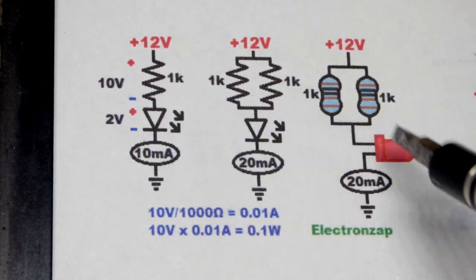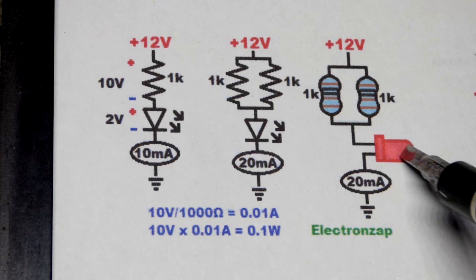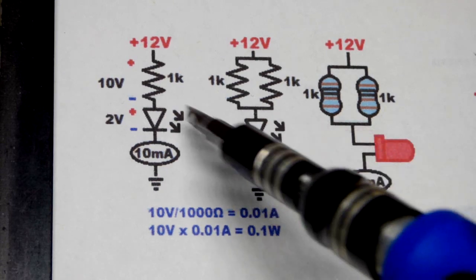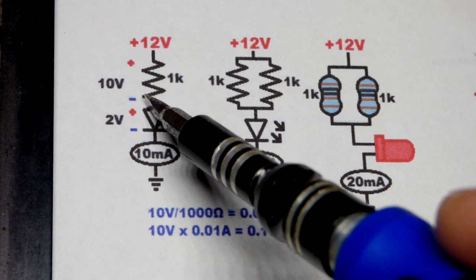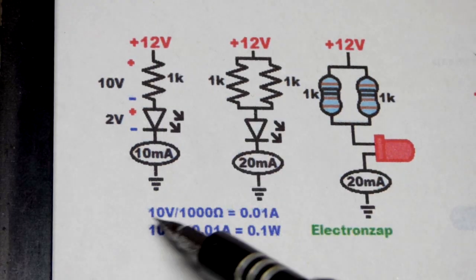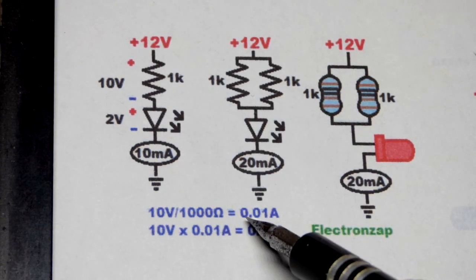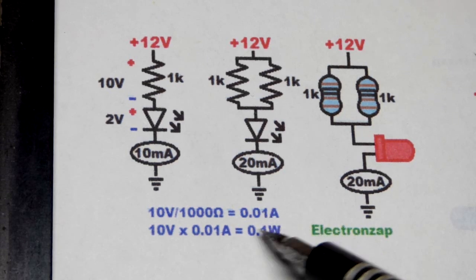So of 12 volts, about two volts is being dropped from a red LED. Blue or green will drop about three, but that red drops about two, leaving 10 volts across one resistor there which sets the current. 10 volts divided by a thousand ohms equals 0.01 amps, which is 10 milliamps.